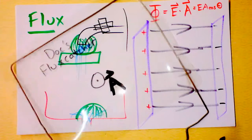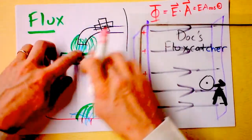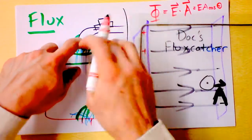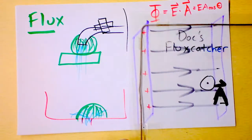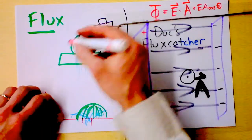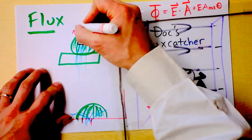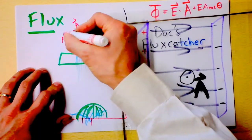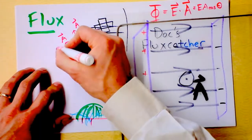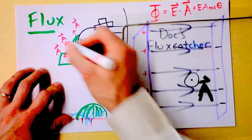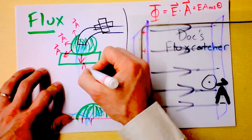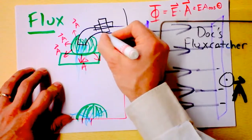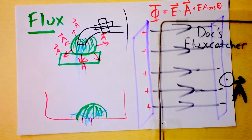For closed surfaces — things that loop in on themselves, like spherical flux catchers — the area direction is always outward. That is a strange concept, but an important one. The area vector points out for a closed bag-like surface.